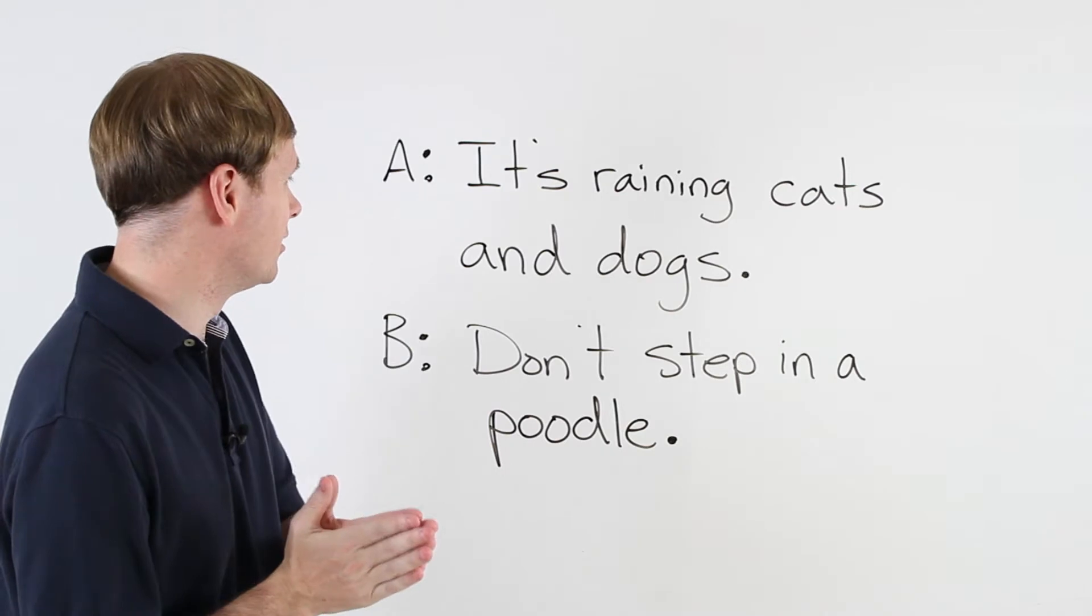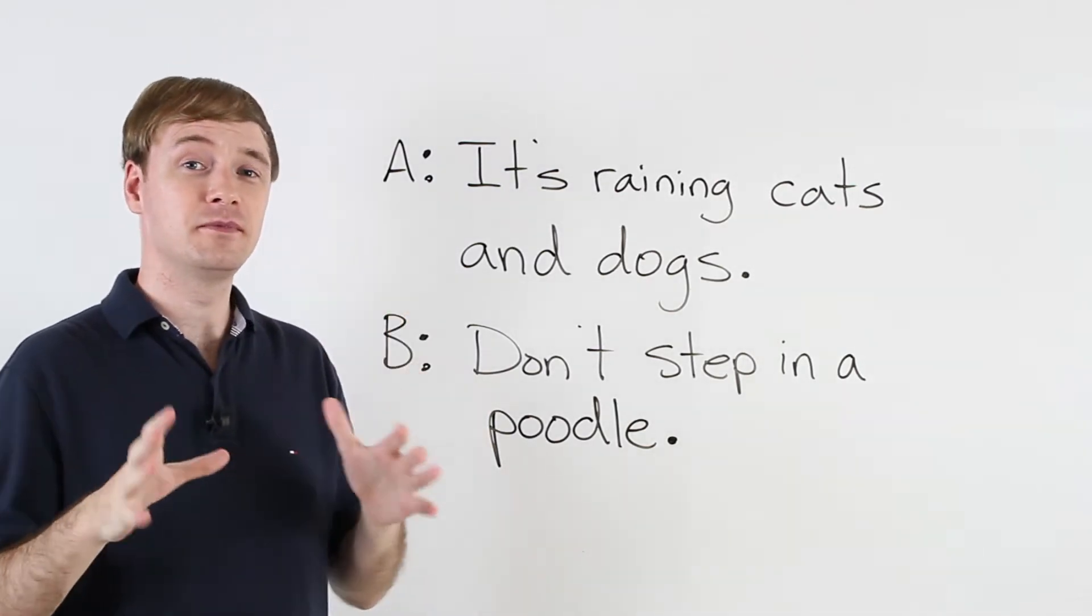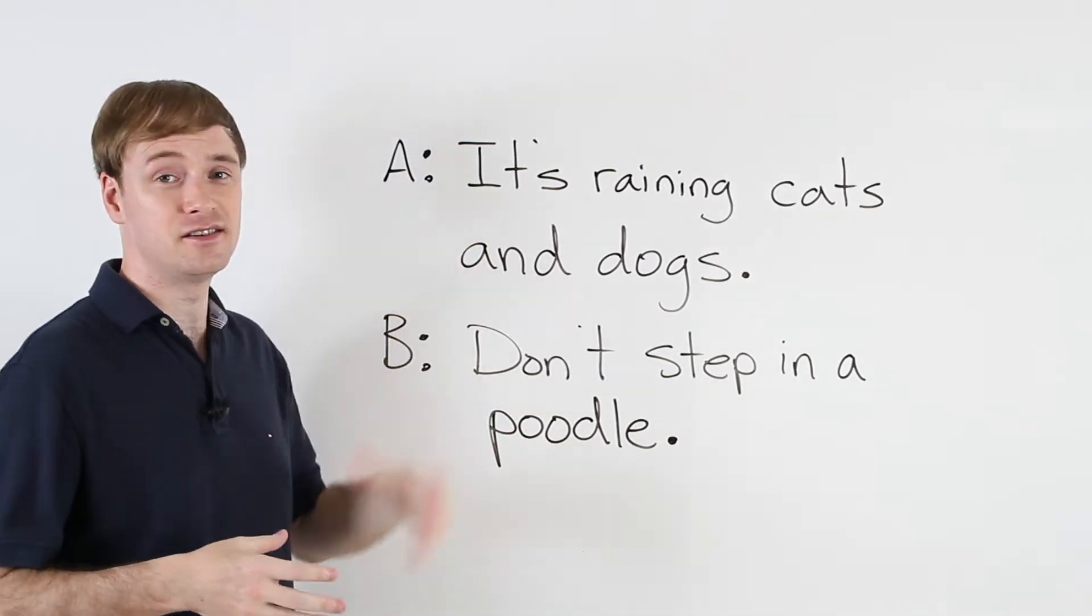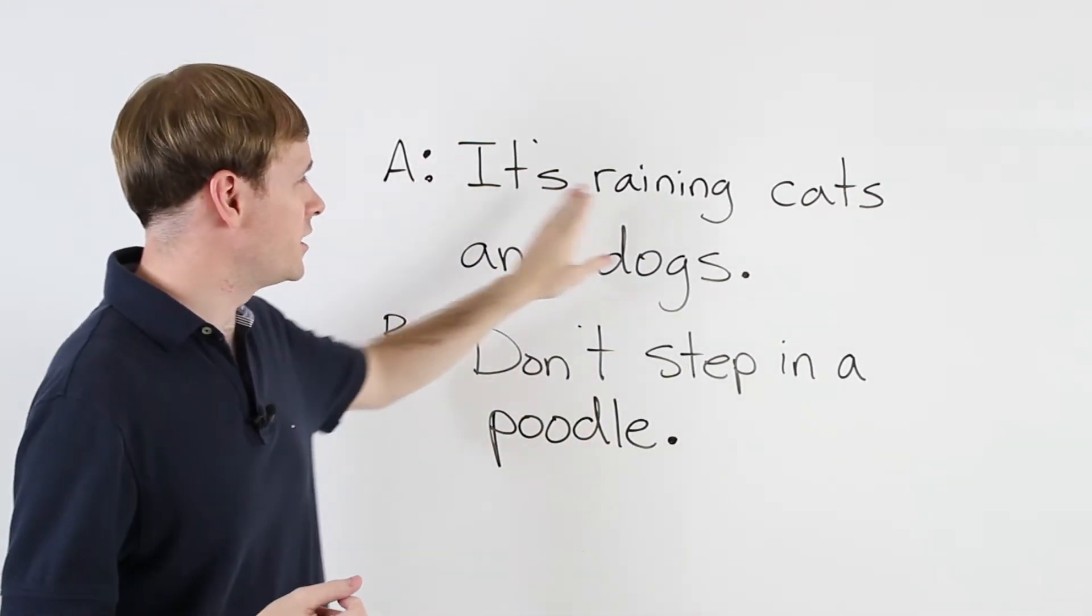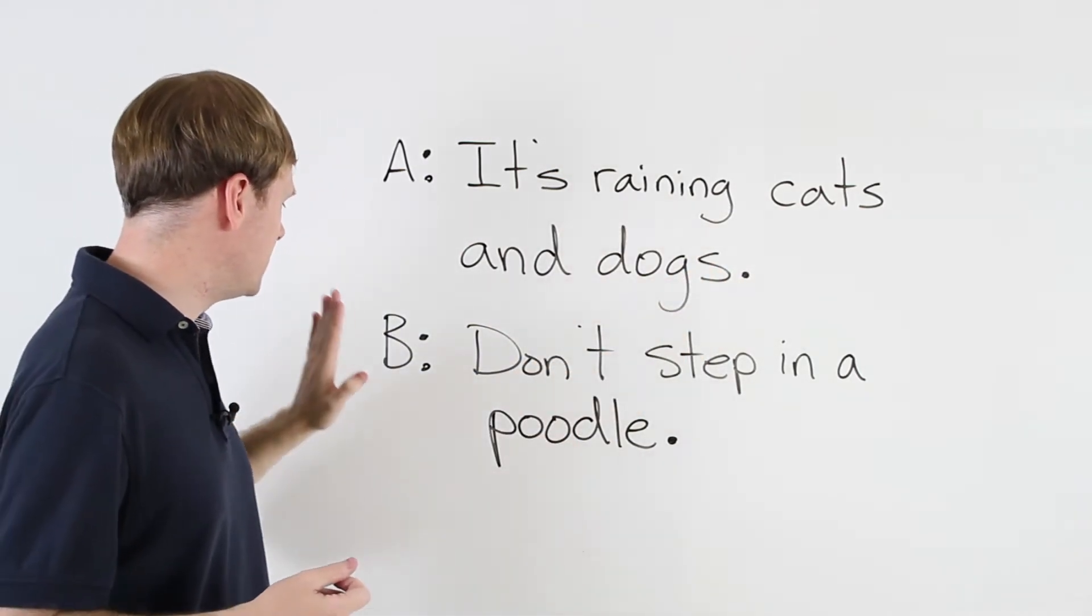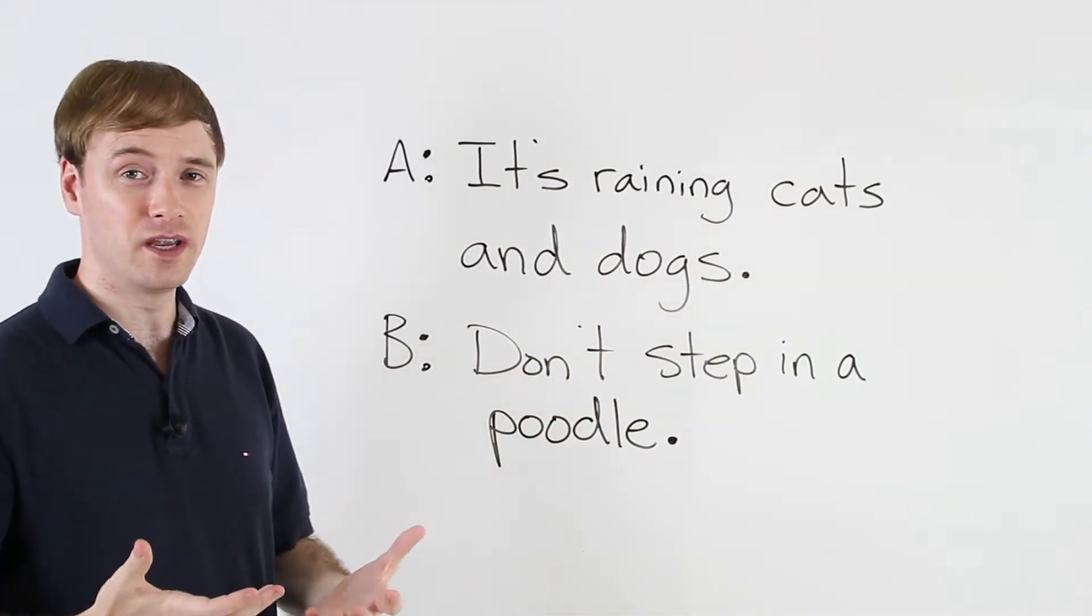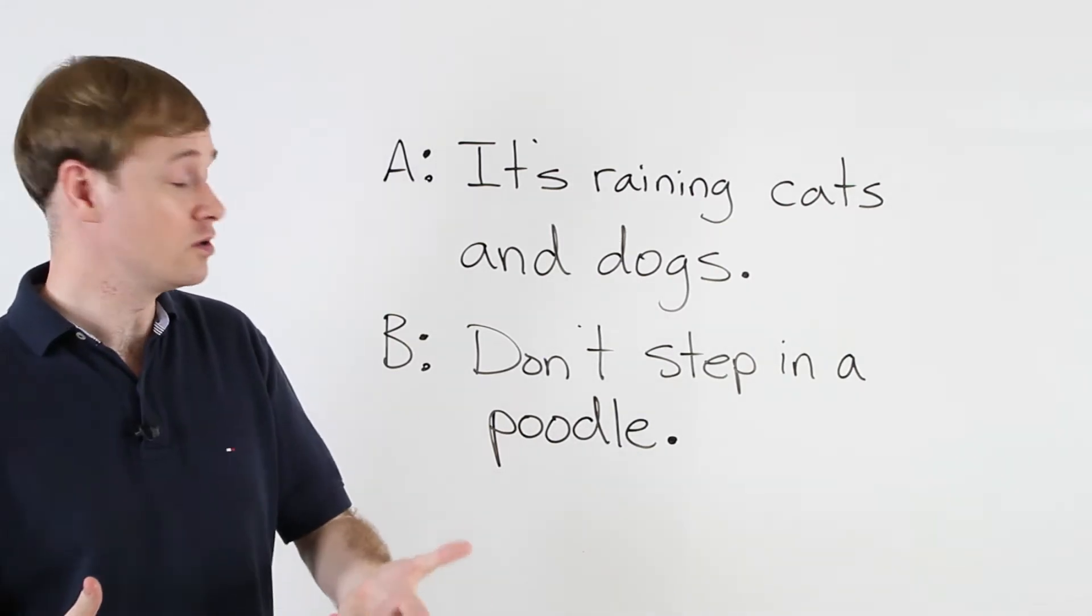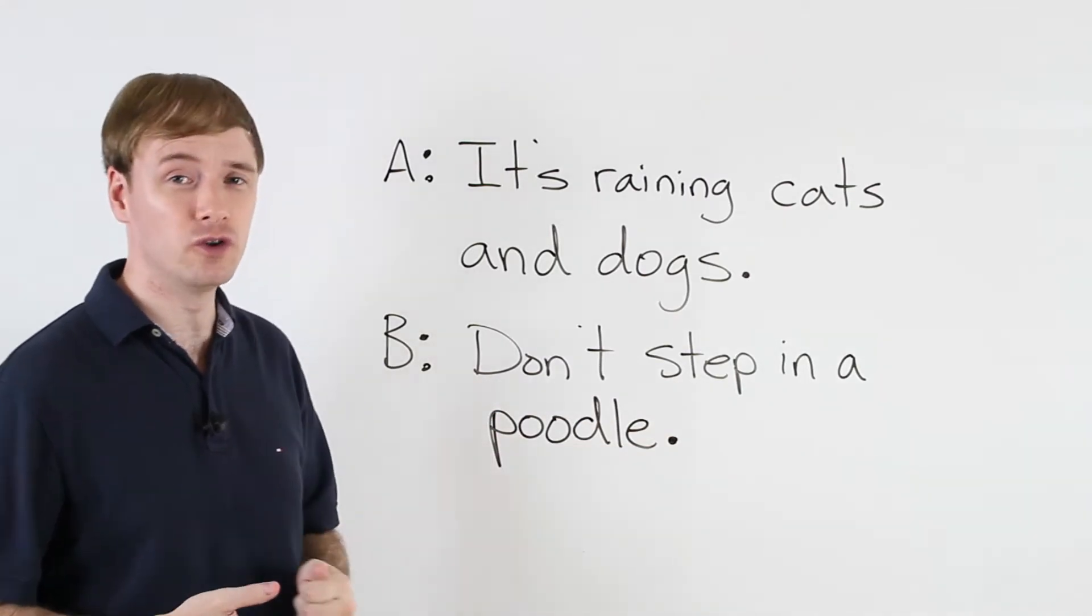Now look at my dialogue. It's a little bit difficult to understand, so listen carefully. Person A says the idiom: it's raining cats and dogs. Now person B says a joke. He replies, and this is a common reply as a joke: don't step in a poodle.